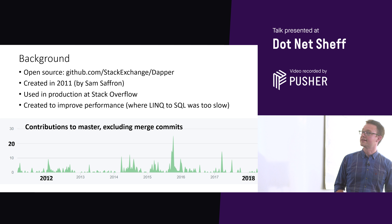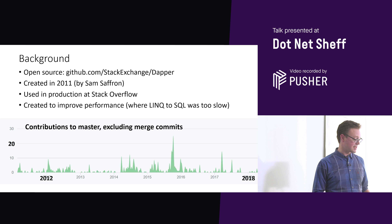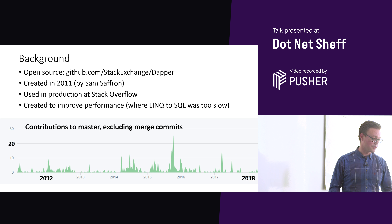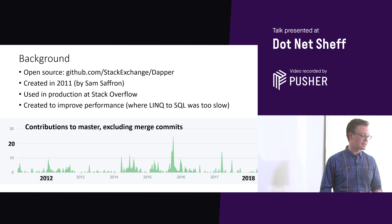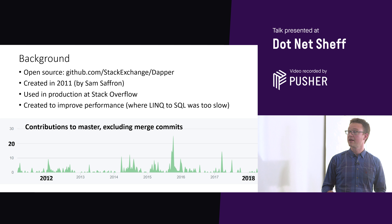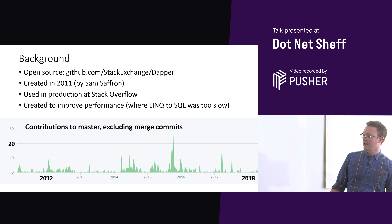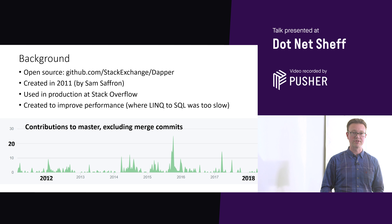A bit of background: it's open source on GitHub and has been going about seven years. It was created by someone at Stack Overflow and is still maintained by Stack Overflow and used in production there. They created it to improve their page load times — so it was created for performance reasons — but now lots of people use it not for performance, just because it's a nice, lightweight, simple library. The GitHub commits graph at the bottom shows it's been active for a long time, so it's fairly safe to use.